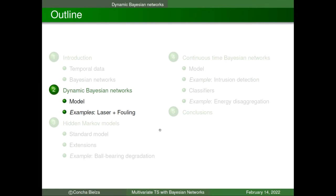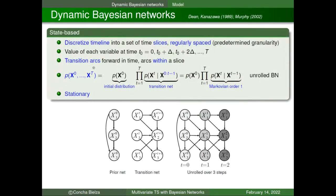Let's start with dynamic Bayesian networks, where we discretize the timeline into regularly-spaced time slices with a predetermined granularity called delta. We observe the value of each variable at regularly-spaced times t0, t0+delta, t0+2*delta, and so on up to the last horizon. We allow arcs forward in time as well as arcs within a time slice.